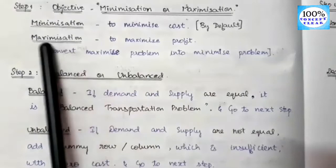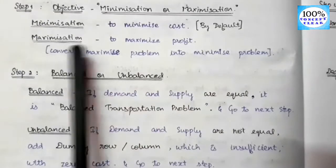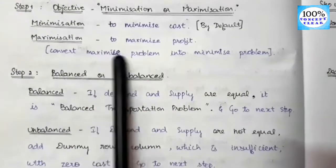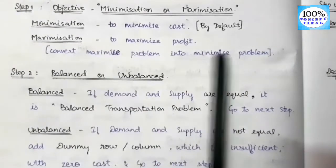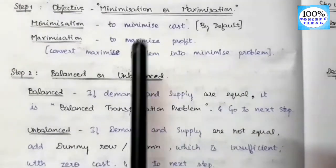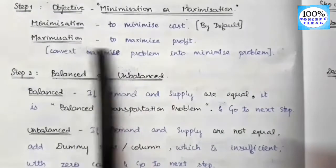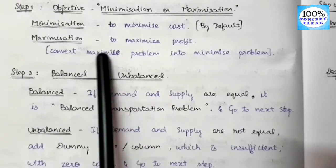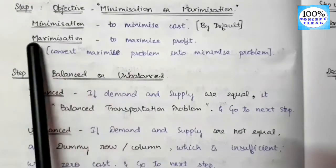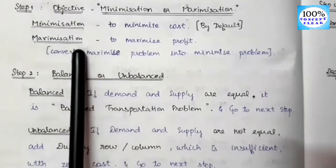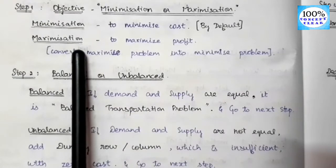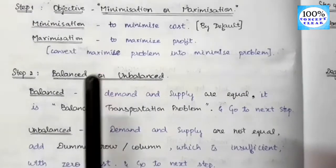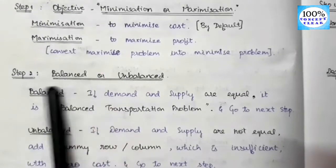If it is a maximization problem, we should convert the maximization problem into a minimization problem — that requires one additional step. This maximization type will be discussed in an upcoming video.